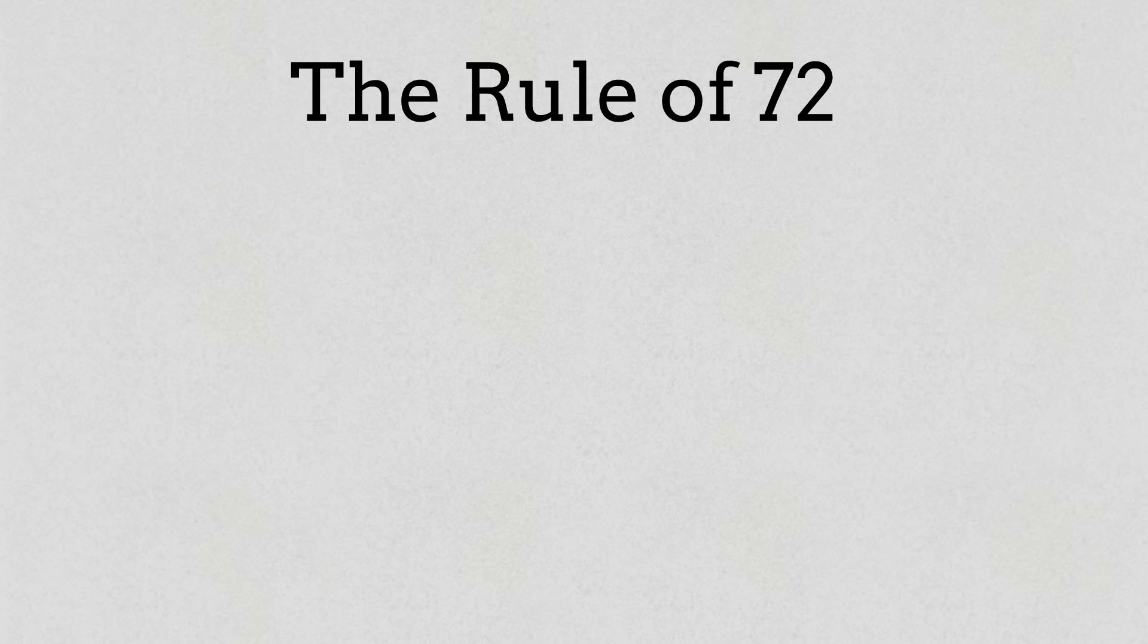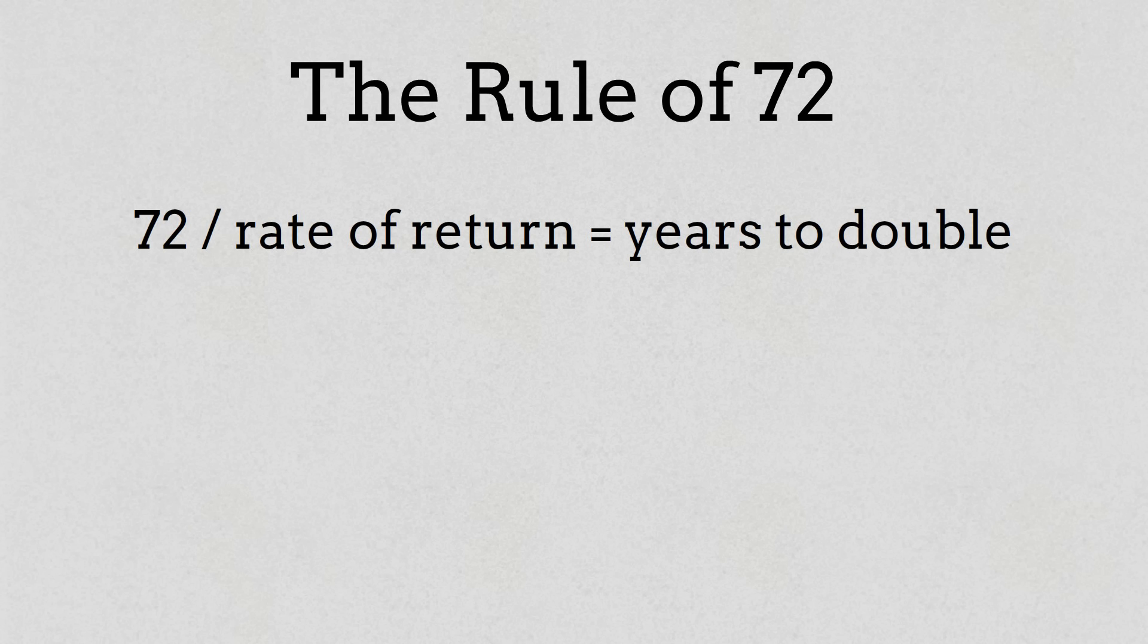There's a simple trick called the rule of 72. Take the number 72 and divide it by your annual rate of return. That tells you roughly how many years it'll take for your money to double. For example, if you earn 8% on your investments, 72 divided by 8 equals 9 years. That means your money doubles every 9 years. If you only earn 4%, it takes 18 years. Big difference.